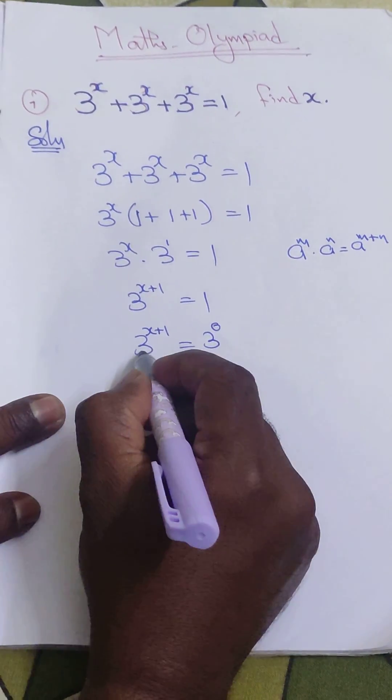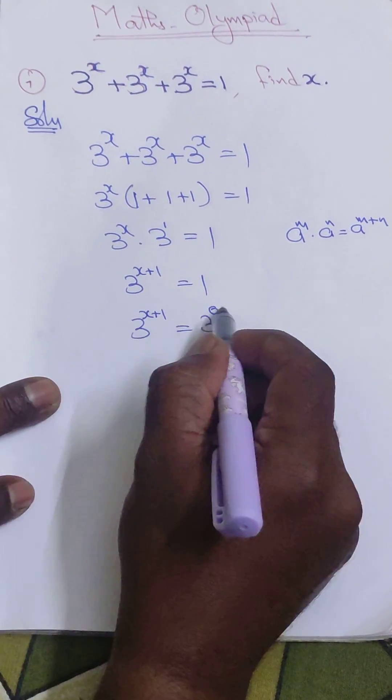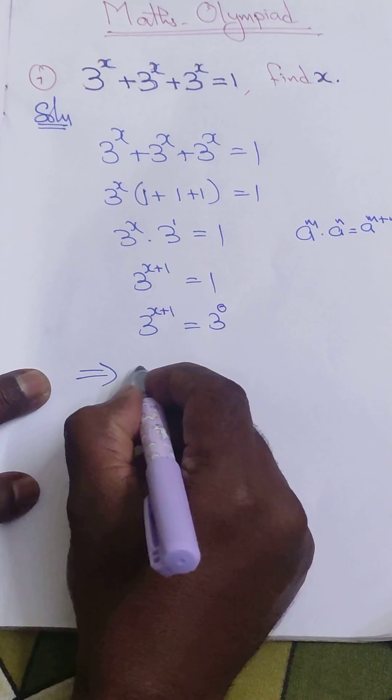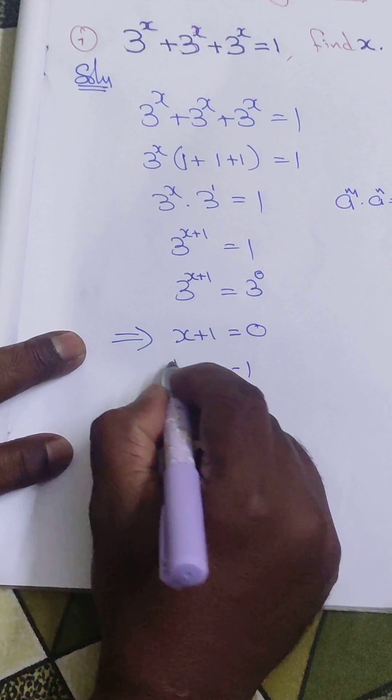So both the bases are equal, then we can equate the powers. Here, x + 1 = 0, that implies x = -1.